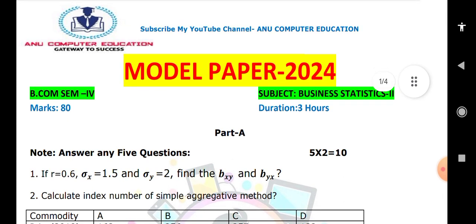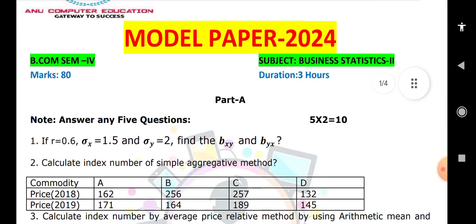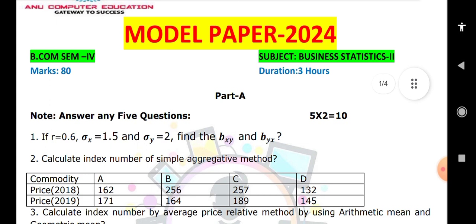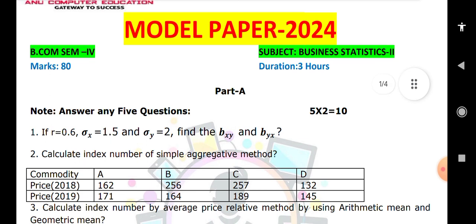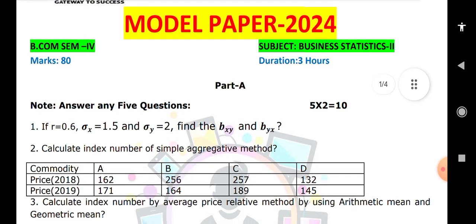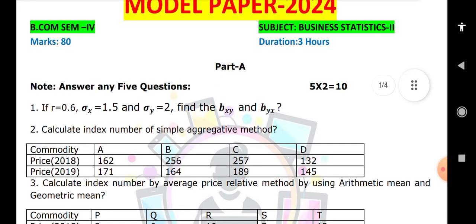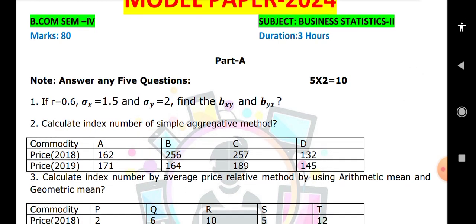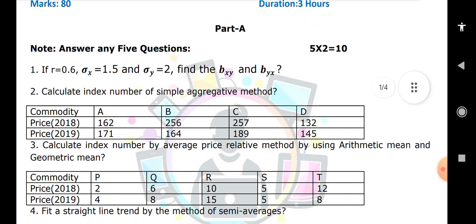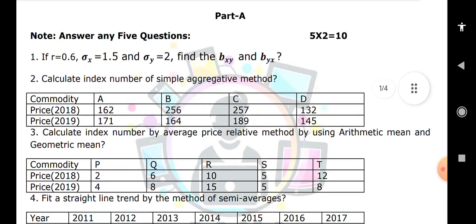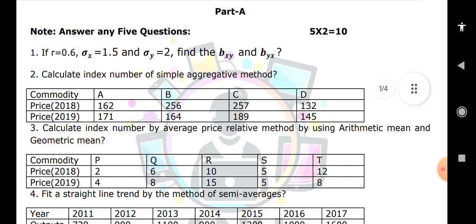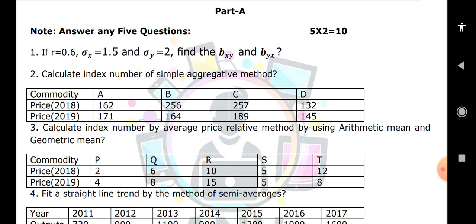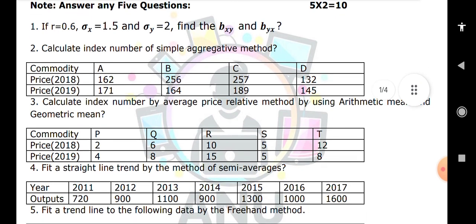The next is a very important short answer: simple aggregative method. Prices are given, so you have to calculate summation P0, summation P1, divided by and into 100. Also, simple average of price relatives method using arithmetic mean and geometric mean - these are very important problems. I will provide the solutions by tomorrow evening in my Telegram channel ANU Computer Education. So join my Telegram channel and the solutions will be provided there.